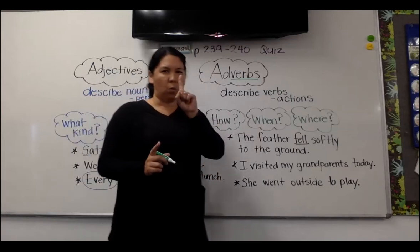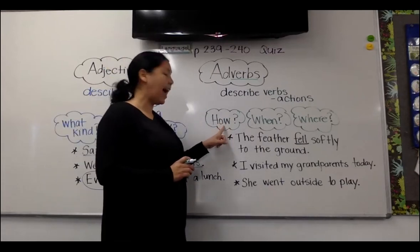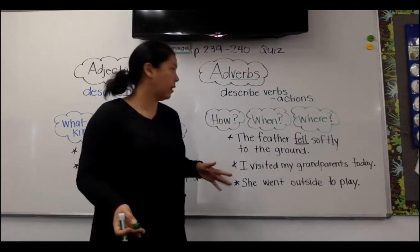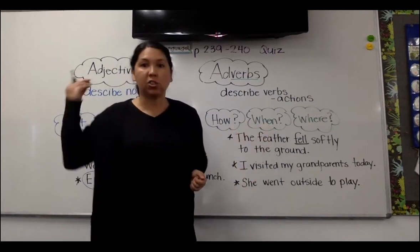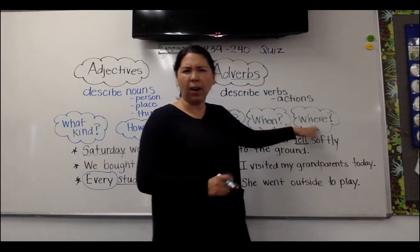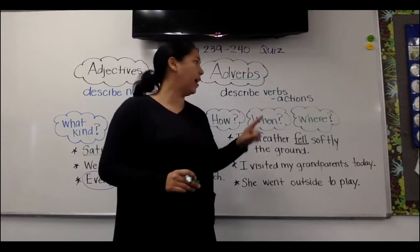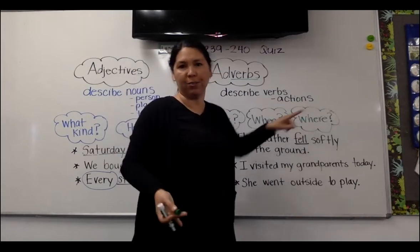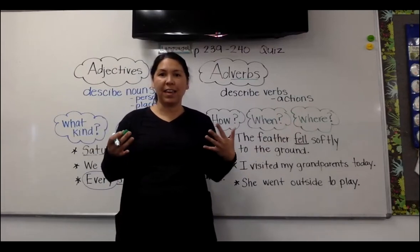So what three questions do adverbs answer? They tell us how someone does the action — how did they run? They ran quickly. When they did an action — when did they run quickly? They ran quickly yesterday. They also ask the question where — where did they run quickly yesterday? So it tells us where the action happened.